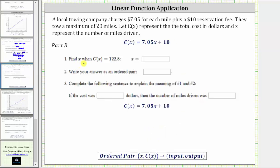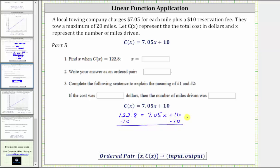For part B, find X, the input, when C of X, the function value or output, is 122.8. To determine the input X, we substitute 122.8 for the function value C of X, giving us the equation 122.8 equals 7.05X plus 10. To solve for X, we first subtract 10 from both sides, giving us 112.8 equals 7.05X. Then we divide both sides by 7.05, and 112.8 divided by 7.05 equals 16.